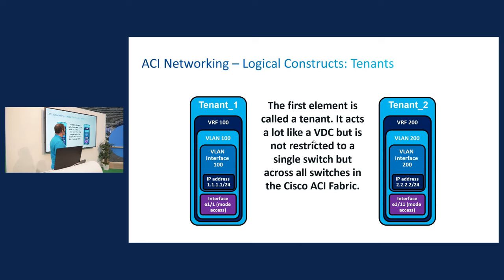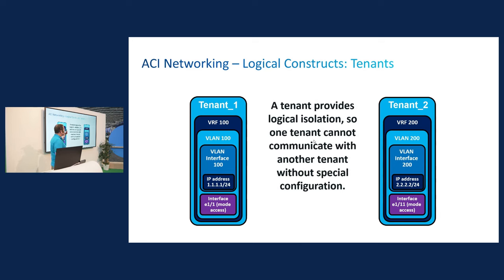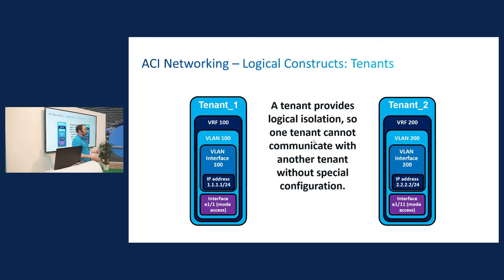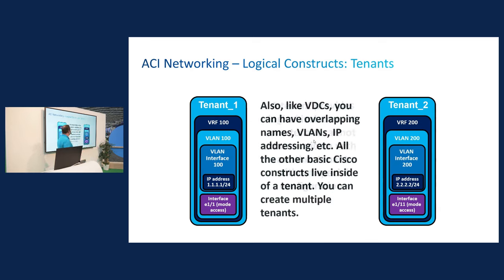Think of the ACI fabric not as multiple switches that are interconnected, but as one giant logical multi-port switch. So you're essentially creating the equivalent of a VDC inside the ACI fabric — it does a lot of the same things. Tenant is logically isolated, just like VDCs are isolated from one another. You cannot have them talk to each other without special configuration. You can communicate through the common tenant or through VRF route leaking, but otherwise they're not going to ever touch or talk to each other.